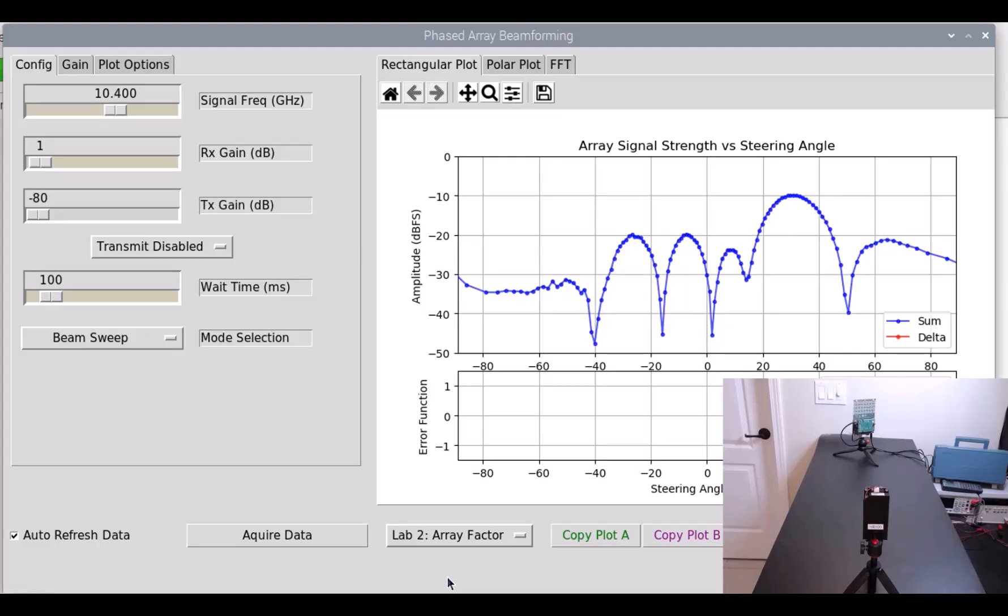In that lab, we stepped the steering angle and plotted the peak FFT amplitude. And we're doing the same thing here. It's just that we're able to step hundreds of steering angles per second and then plot the peak FFT amplitude for each of those steering angles. And this allows us to change some variables and instantly see the impact of the array pattern.